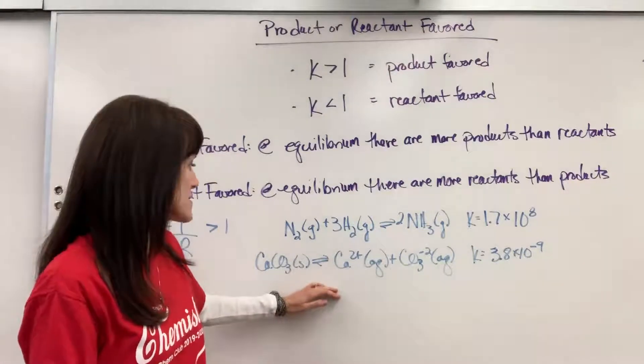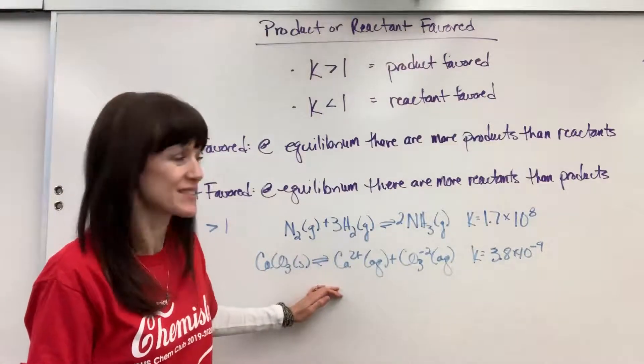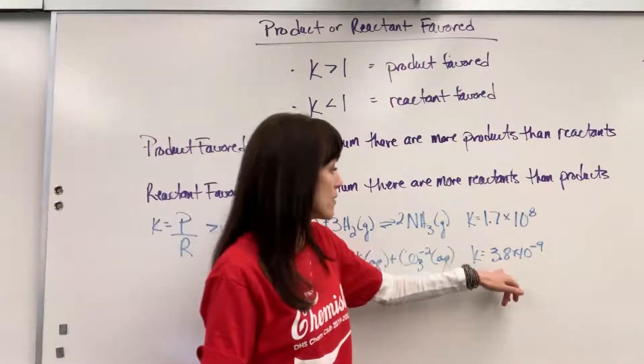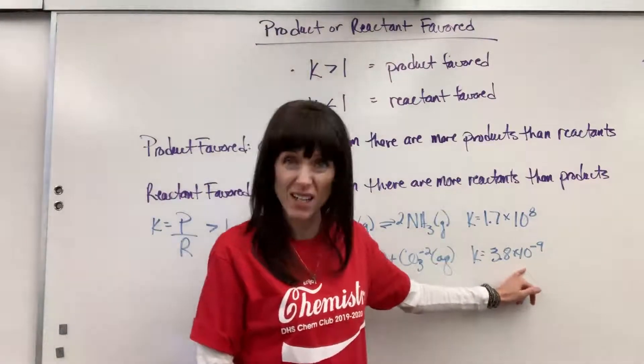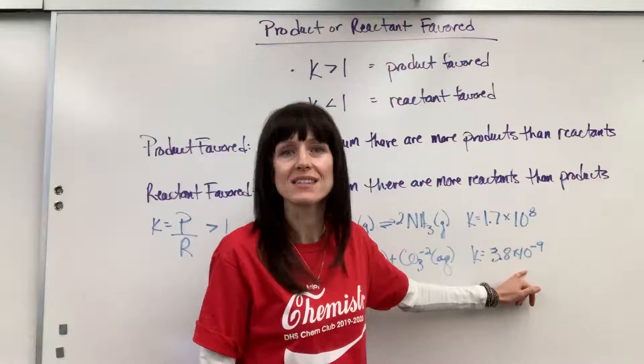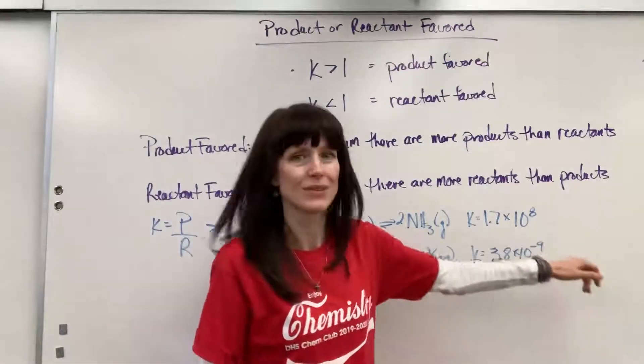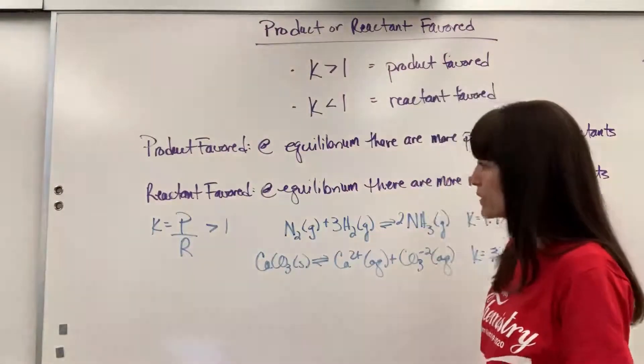So take a look at this. This is going to be the dissolution of calcium carbonate. Its K value, 3.8 times 10 to the minus nine, significantly less than one. Wow, we have those nine decimal places there. Now we're going to move it.